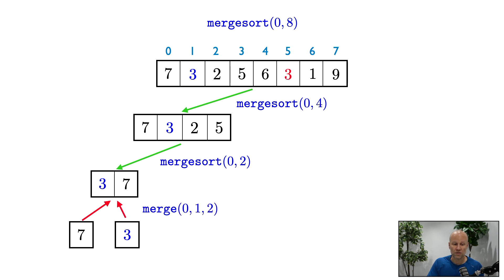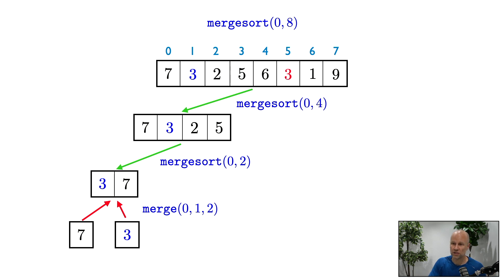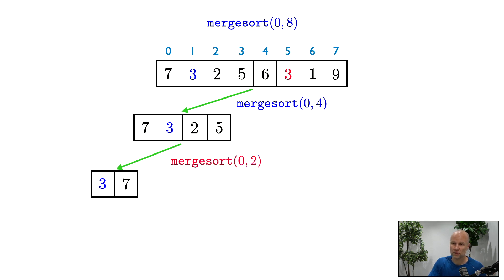Now that these calls are finished we can move on to merge the results. We merge the vector containing 7 with the vector that just contains 3. These are in the wrong order so the merge function here is going to swap them. You can see where the red arrows are pointing — it now says 3 and then 7. After this merge is done, the call to merge sort(0, 2) is finished.